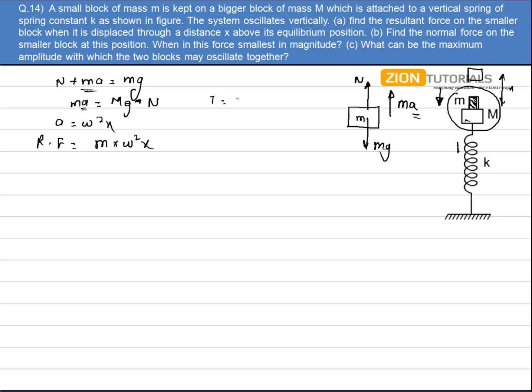In this I know the time period that is 2 pi under root of small m plus capital M by k. So omega square comes out to be k by small m plus capital M. So let's substitute this value. I have the resultant force as m k x divided by small m plus capital M. That is my answer for the fourth part.